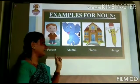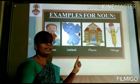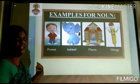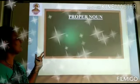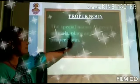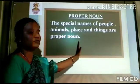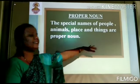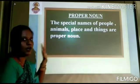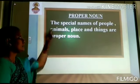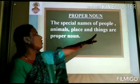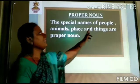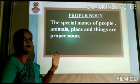Names of a person, animal, place, things are noun. And next is proper noun. The special names of these people, animals, place and things are proper noun. Special names of people, animals, place and things are proper noun.